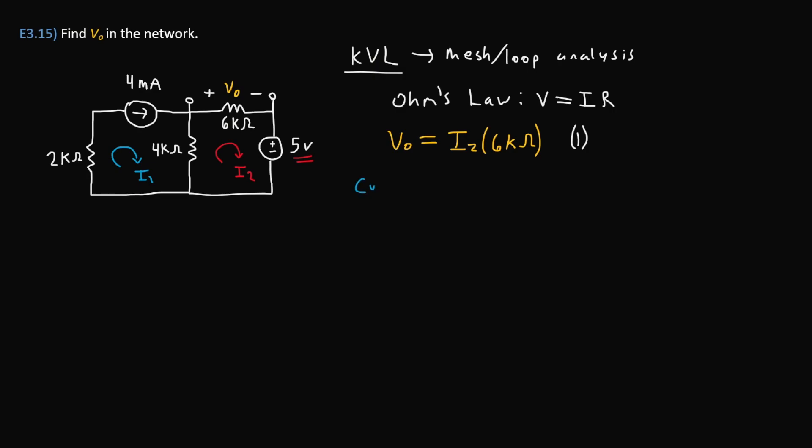We're going to have a current constraint equation, which is simply going to be I₁ strictly equals the 4 milliamps. Again, this is because the current needs to be 4 milliamps in order to satisfy that current source. That right there is simply equation 2.